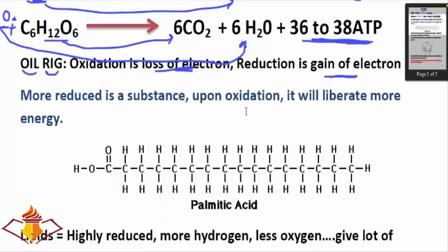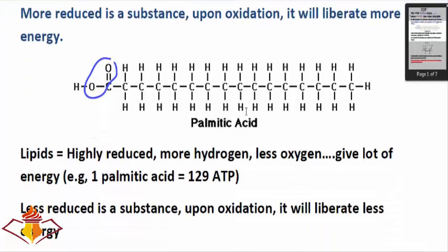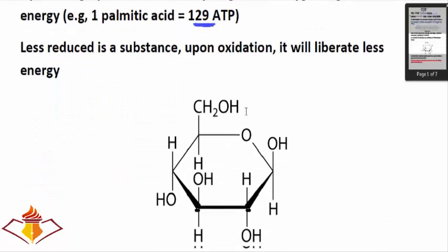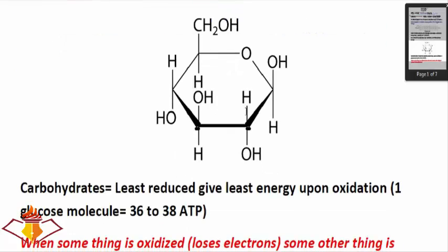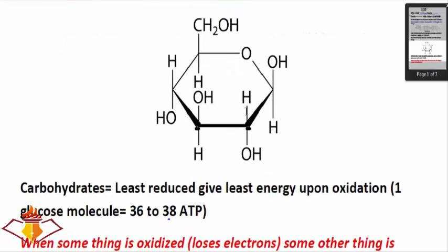The more reduced a substance is, the more energy it produces upon oxidation. For example, palmitic acid has a lot of hydrogen but only two oxygen atoms, so upon oxidation it produces about 129 ATP. Glucose, which is less reduced compared to palmitic acid because it has more oxygen, produces about 38 ATP.